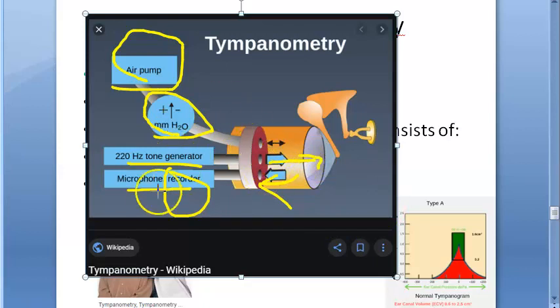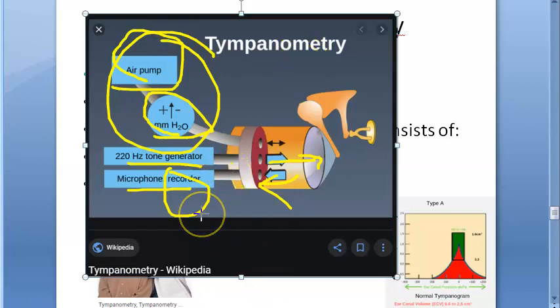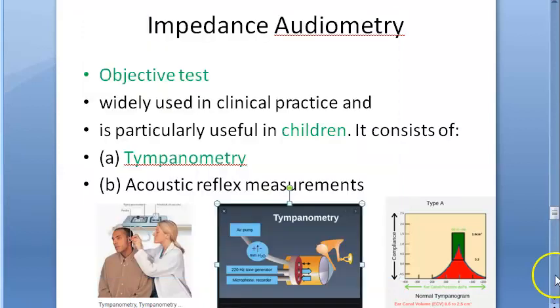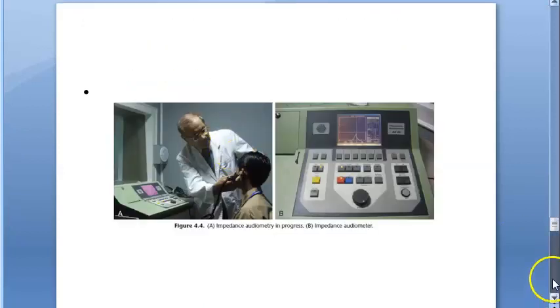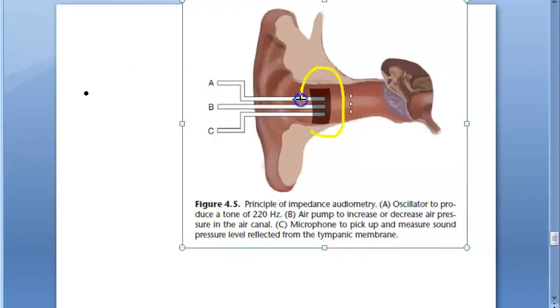So three things are present: one component maintains the pressure. Basically, pressure changes occur in the sealed external auditory canal. They seal the external auditory canal — as you can see in the textbook images here.